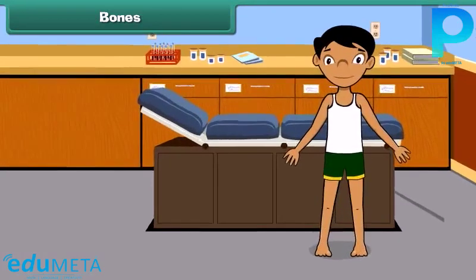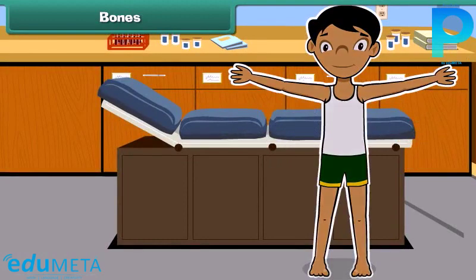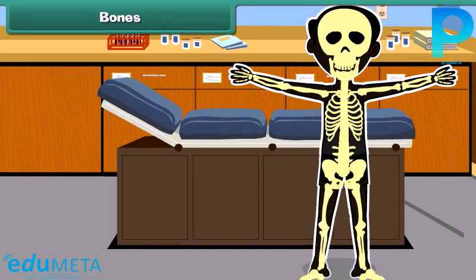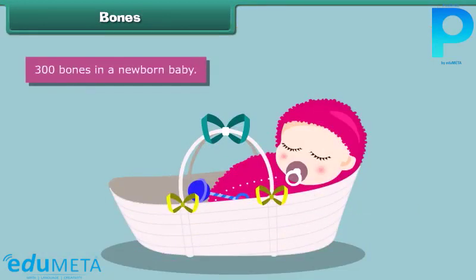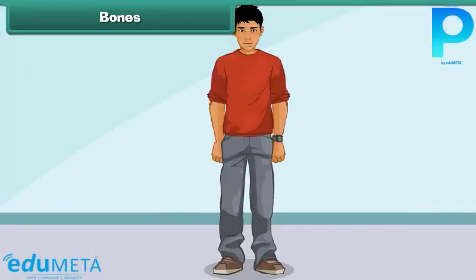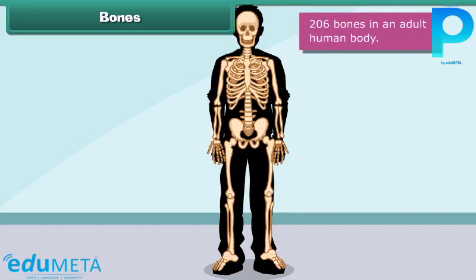Every single person has a skeleton made up of many bones. These bones give your body a structure. At birth, a newborn baby has about 300 bones, whereas an adult human body contains approximately 206 bones.